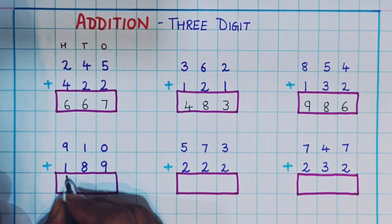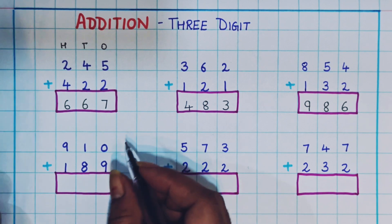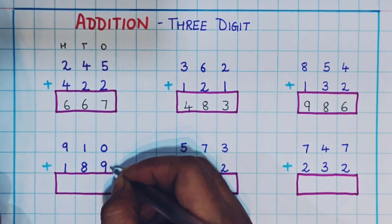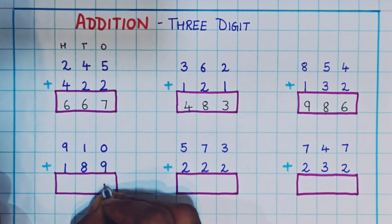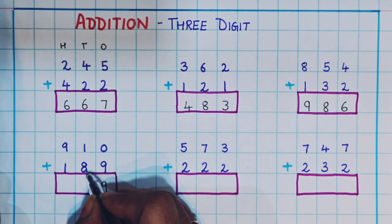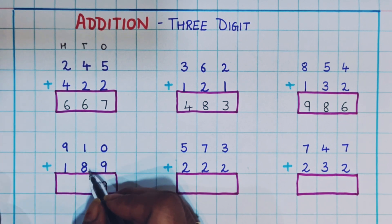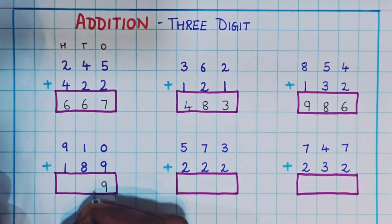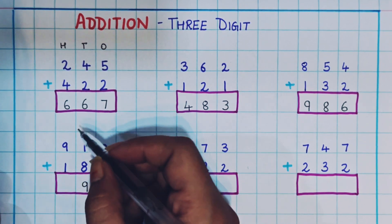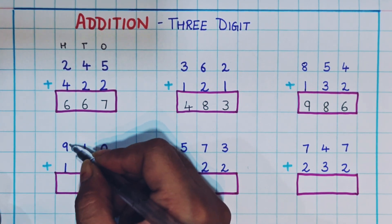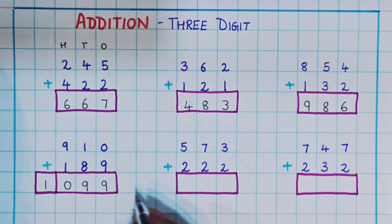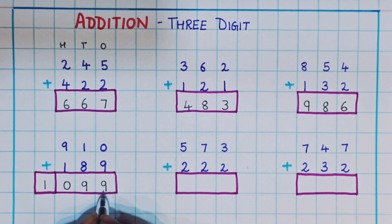Now let's do some more problems: 910 plus 189. Now 0 plus 9 — 9 in the mind plus 0. Anything plus 0 is that number itself, so this is 9. Then 8 plus 1: 8 in the mind plus 1 is 9, so here I will write 9. Now 9 plus 1: 9 in the mind and plus 1 is 10. So the answer is 1099.